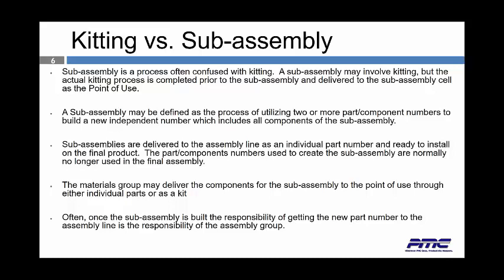Subassemblies are delivered to the assembly line as an individual part number, ready to install on the final product. The part component numbers used to create the subassembly are normally no longer used in a final assembly. There might be ten parts being delivered to a subassembly cell via a kit, and the subassembly cell will then utilize those ten parts to build a final part number. The materials group may deliver components for the subassembly through individual part numbers or as a kit. Once the assembly is built, responsibility for getting the new part to the assembly line belongs to the assembly group. Usually, once subassembly starts, materials no longer handles the parts, though there are exceptions to that rule that should be evaluated on an individual basis.